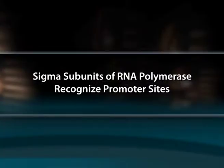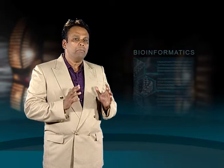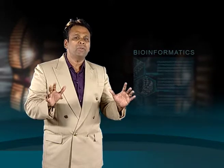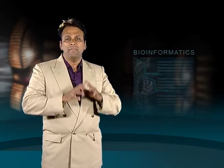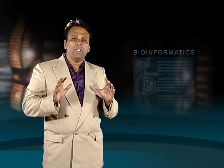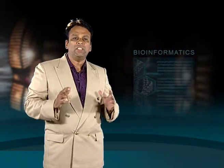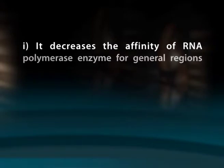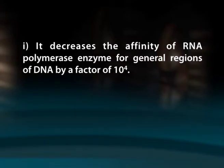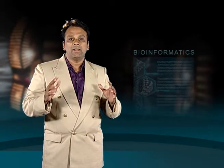Sigma subunits of RNA polymerase recognize promoter sites. The tetrameric core consisting of alpha-2, beta, beta prime of RNA polymerase is unable to start initiation of transcription at promoter sites without sigma factor. The complete holoenzyme consisting of alpha-2, beta, beta prime, sigma is essential for initiation of transcription at the correct start site. The sigma subunit contributes to specific initiation in two ways: first, it decreases the affinity of RNA polymerase for general regions of DNA by a factor of 10 to the power of 4, since the core enzyme binds DNA indiscriminately and tightly in its absence.